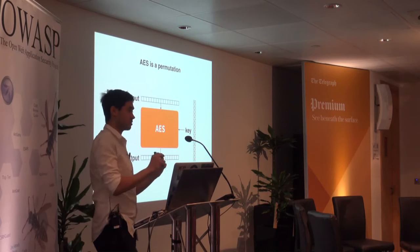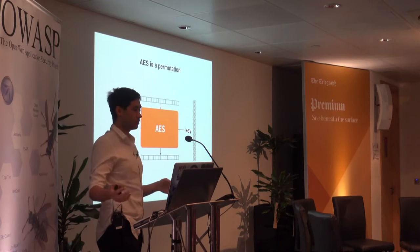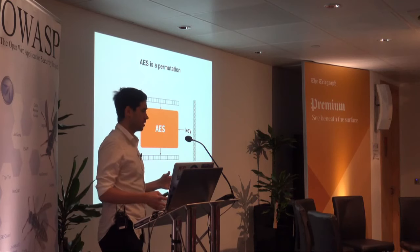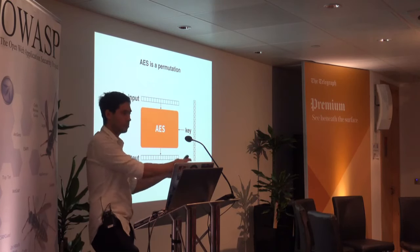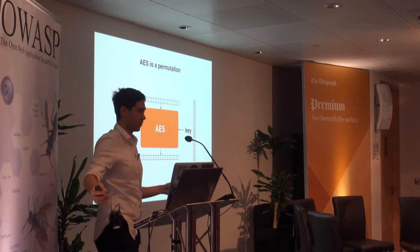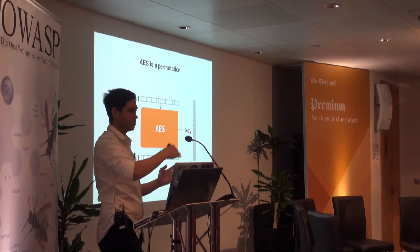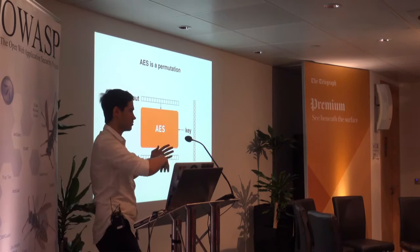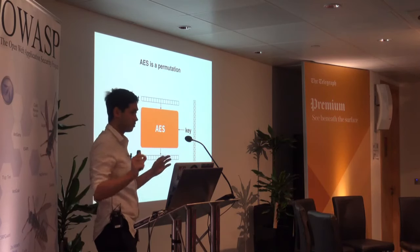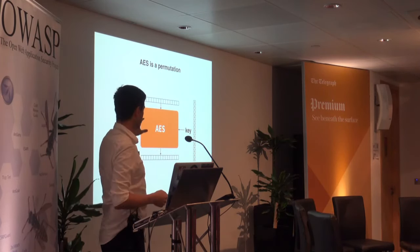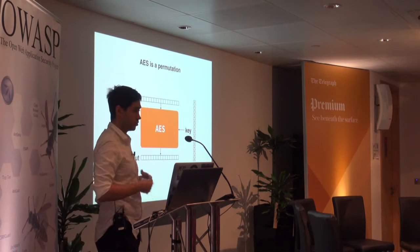There's a one-to-one mapping because if different plaintexts could correspond to the same ciphertext, you wouldn't know how to decrypt. So every time I talk about a permutation, you can think of AES with a non-key.